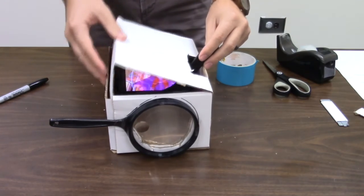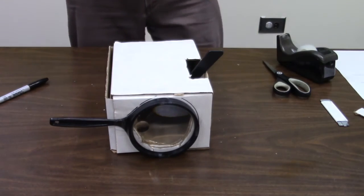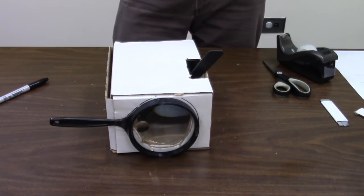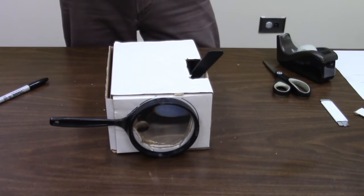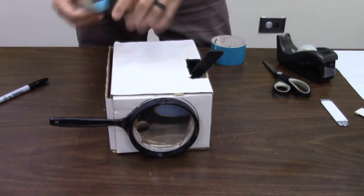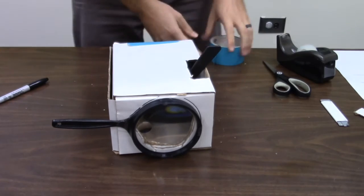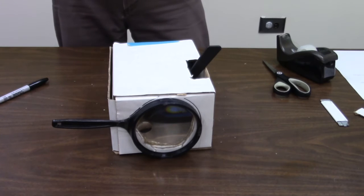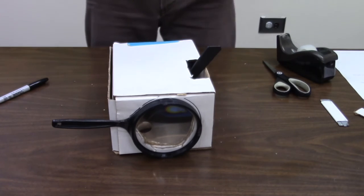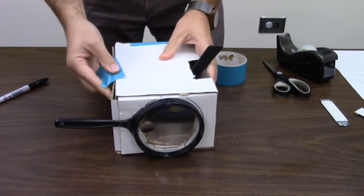You want to close the box. And this is where you're going to use the other tape. Because now, we want to try to shut out any extra light from getting in. So, you want to tape up your ends nice and tight to make sure that the light inside the box can't escape.